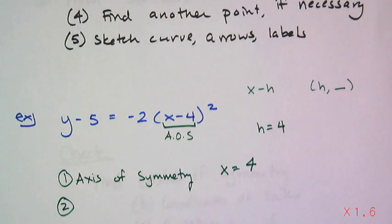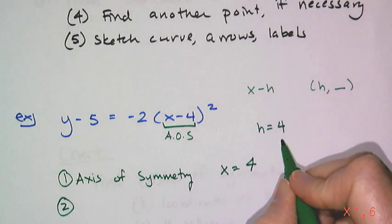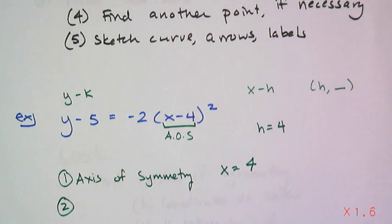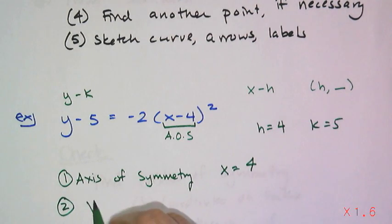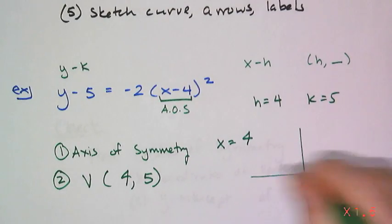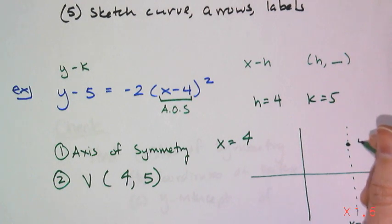And then our vertex happens at h comma k and I have h as 4. And then remember this form had y minus k. And so then my k value is 5. So my vertex is located at 4 comma 5. And so if I think about what I have for my parabola, I have x equals 4 as my axis of symmetry. And over here at 4 comma 5, I have my vertex.